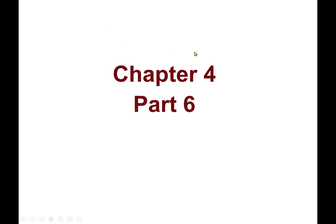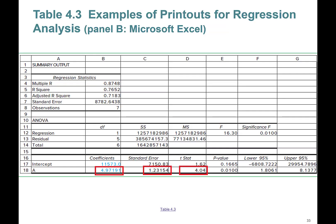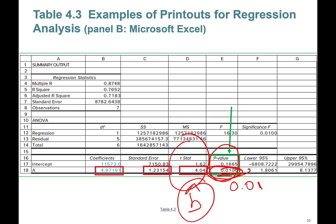Hello everyone, this is Chapter 4 Part 6. In this part we'll learn about using p-values to determine the level of significance. Last time we looked at how to conduct a T-test, and the last thing I showed you was the p-value. Short answer: whatever you see as the p-value, that is the level of significance. For instance, this p-value is 0.01, so B-hat is statistically significant at the 1% level.